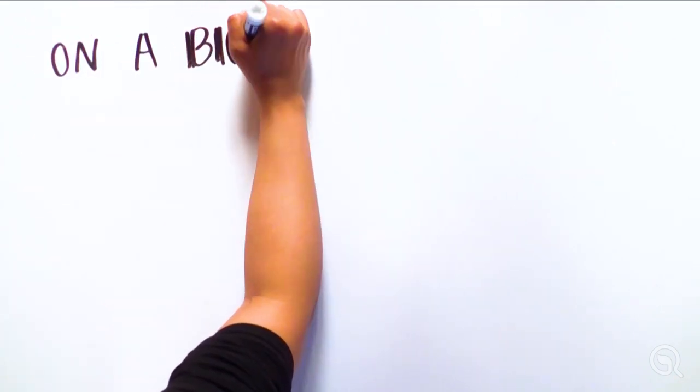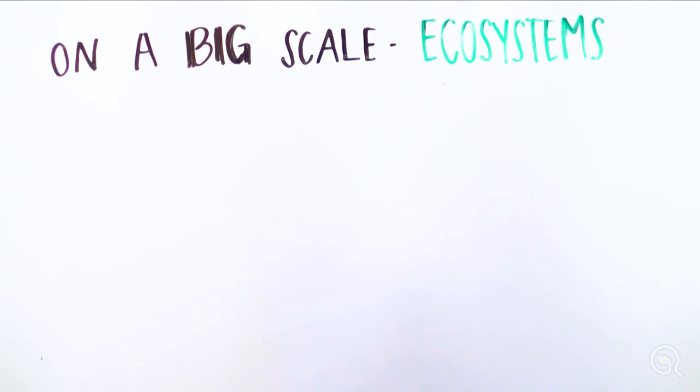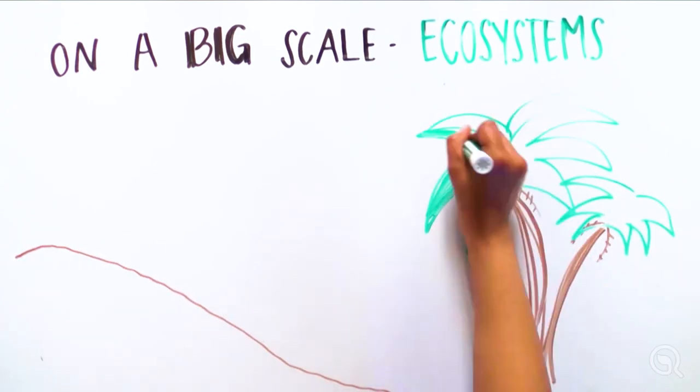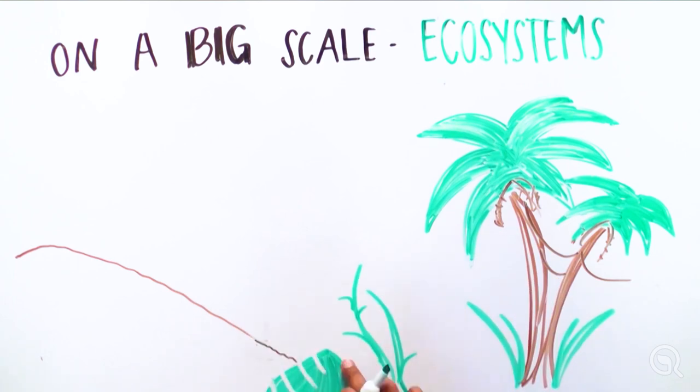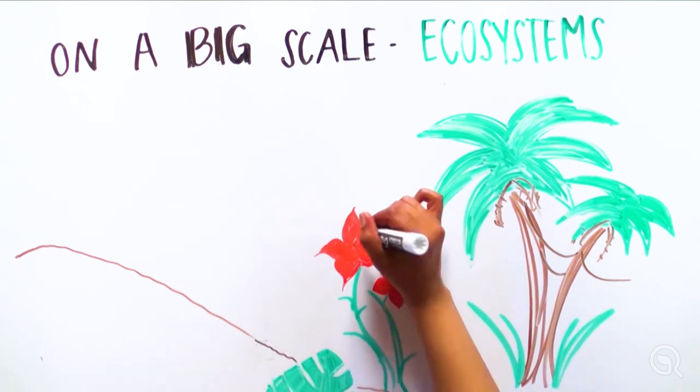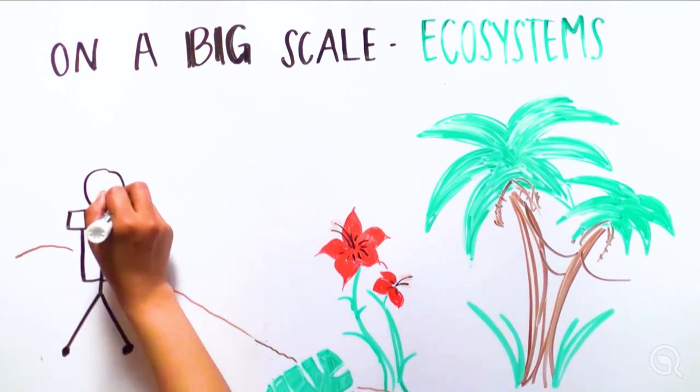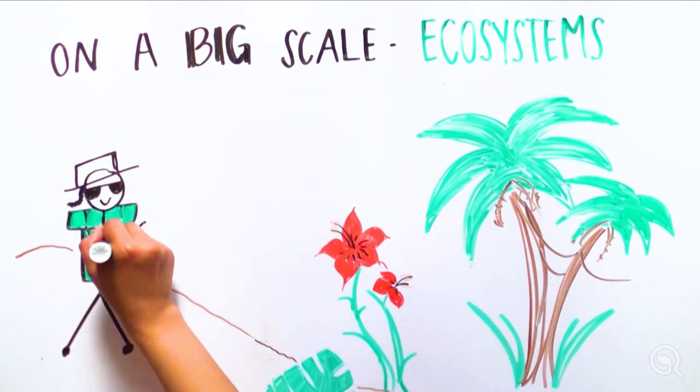Let's start big on the scale of living things and look at an ecosystem. Let's look at the structure of the tropical rainforest ecosystem found near the equator. There are trees, flowering plants, birds, butterflies, and other species in this diverse ecosystem.